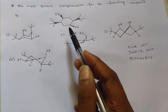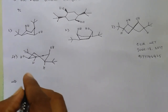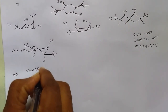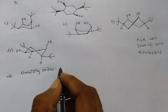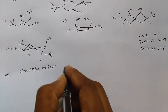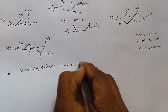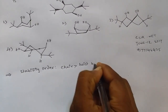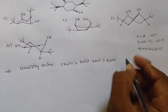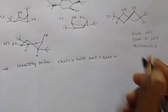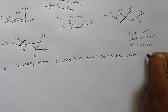First, we know that the stability order of cyclohexane conformations is as follows: chair is more stable than twisted boat, which is more stable than boat, which is more stable than half chair, which is more stable than half boat.